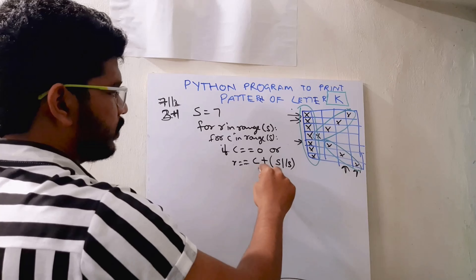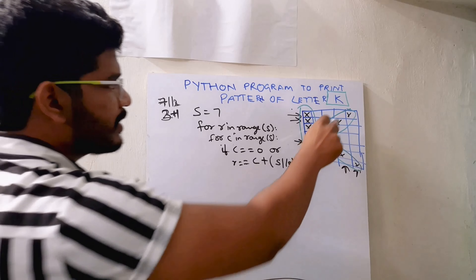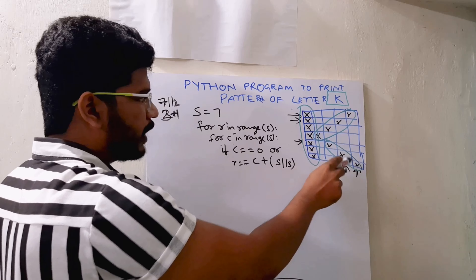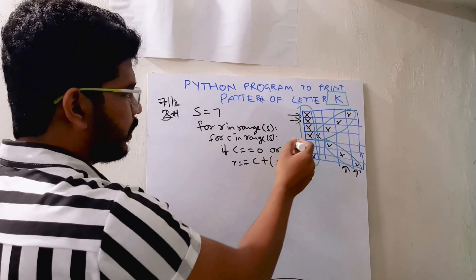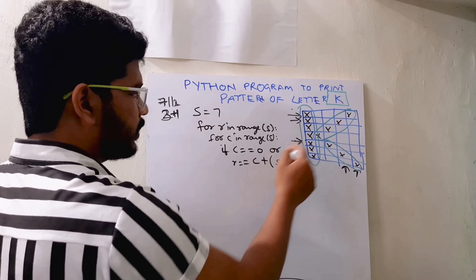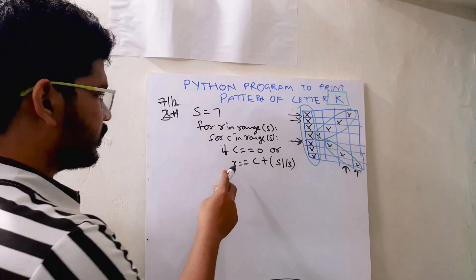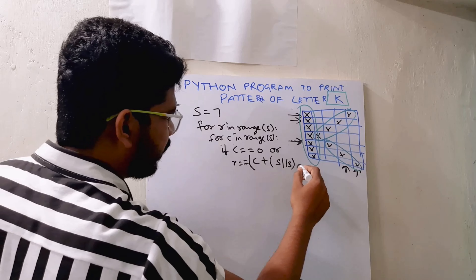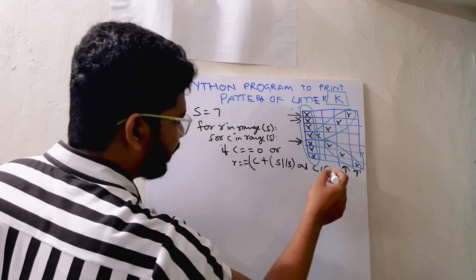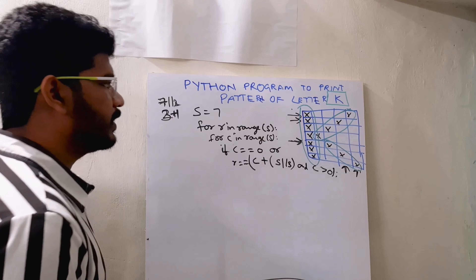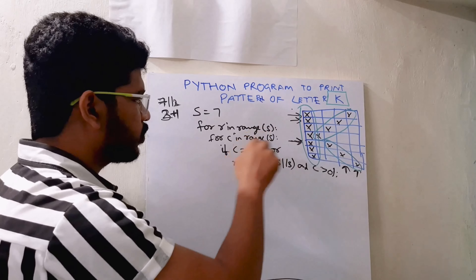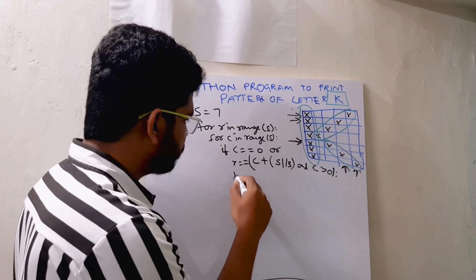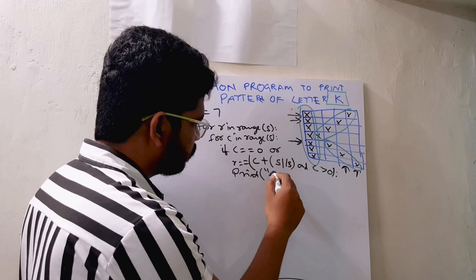After finding this row, I will print stars at that end, then start decrementing to come back. The condition is: r equals c plus s // 3, and the column should not be equal to zero (column greater than zero). This is the condition for the upper diagonal. So in these two conditions — first column and upper diagonal — I will print stars.